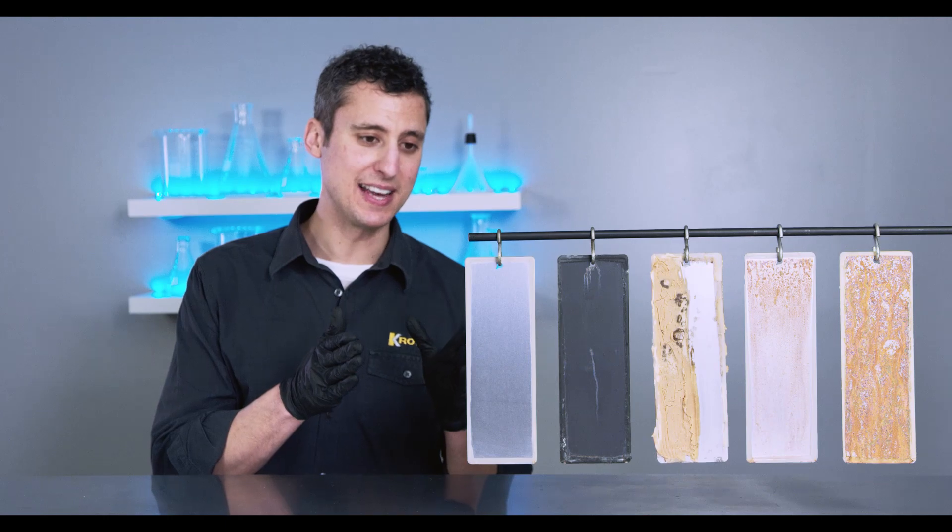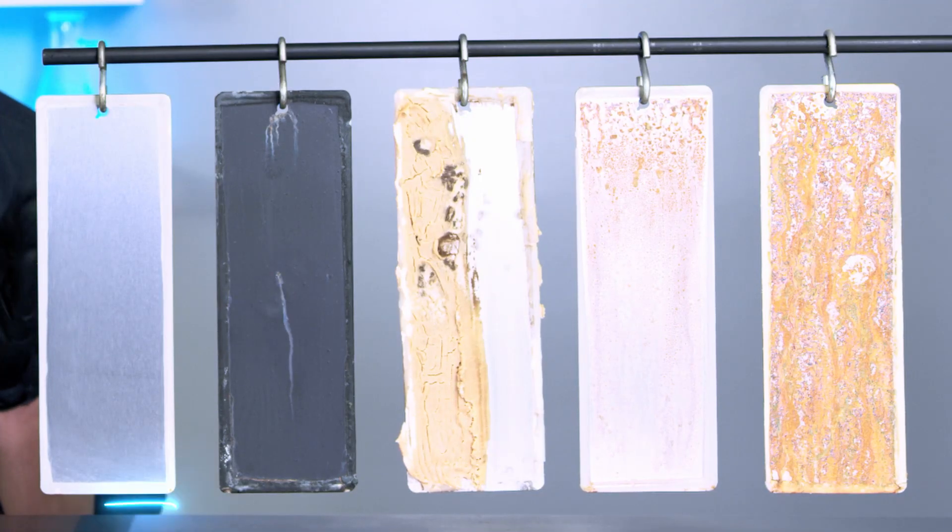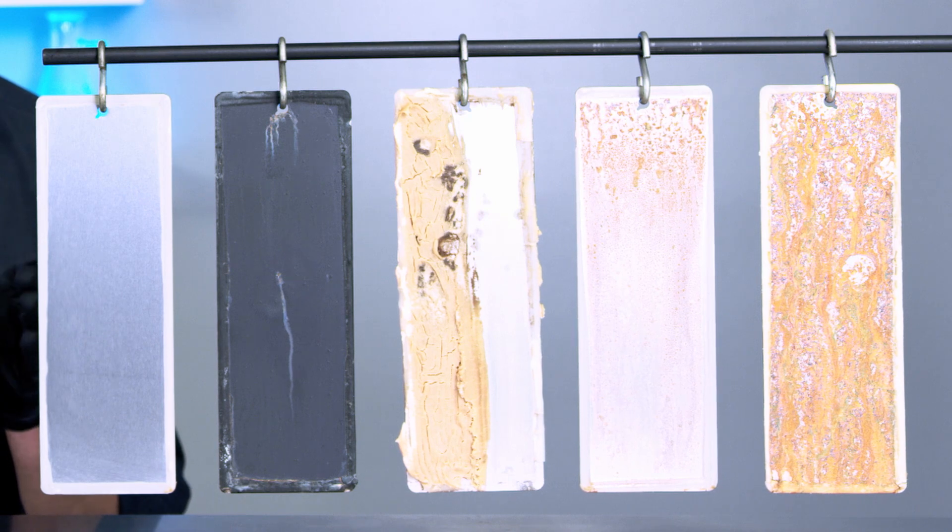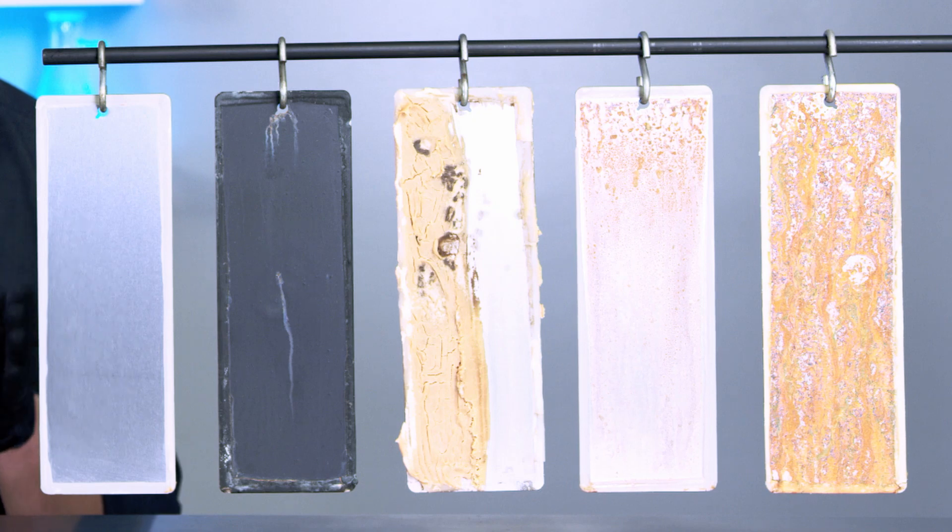Last but not least, we're going to take a look at this fifth panel where the Crown rust protection has been applied, and as you can see, after over 72 hours in the salt spray cabinet chamber, there's absolutely no corrosion on that panel. Now interestingly enough, the Crown product will last over 120 hours in the salt spray cabinet test before corrosion begins to form on that panel.